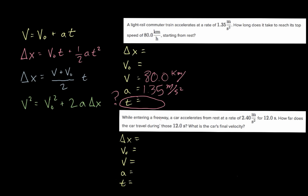And then it says 'starting from rest,' which means at the beginning the train has zero for its initial velocity — it's just sitting there. So that's zero meters per second. So we've analyzed this question, and the change in distance didn't appear anywhere — it's just these four values. We can look at the equations and identify one that has all of these things and doesn't have delta x, since we don't know delta x and we're not looking for it either.